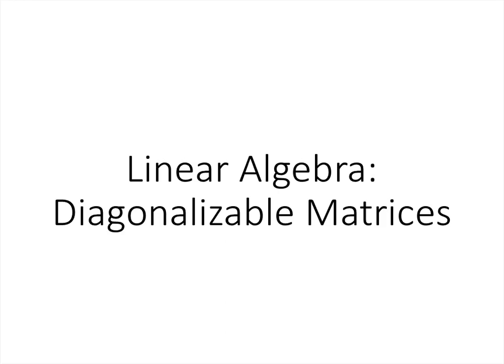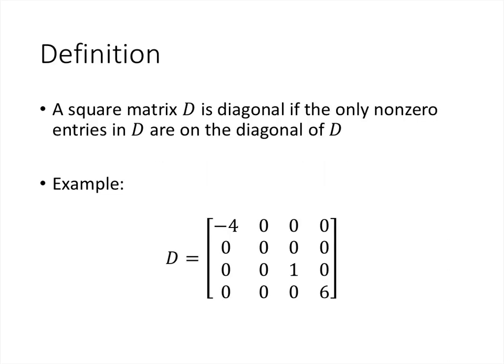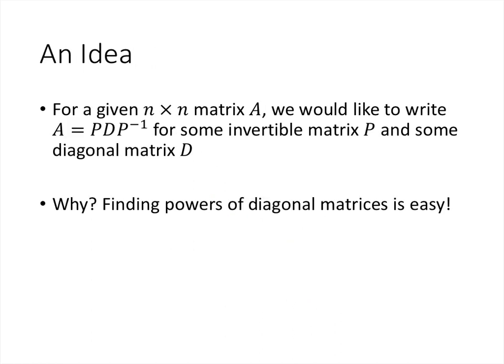In this lecture, we'll talk about what it means for a matrix to be diagonalizable and then prove a theorem that tells us exactly when a matrix has this property. A diagonal matrix is one where the only nonzero entries are on the main diagonal — all off-diagonal entries must be zero. For a given n-by-n matrix A, diagonalizability means we can write A in the form PDP⁻¹ for some invertible matrix P and some diagonal matrix D.